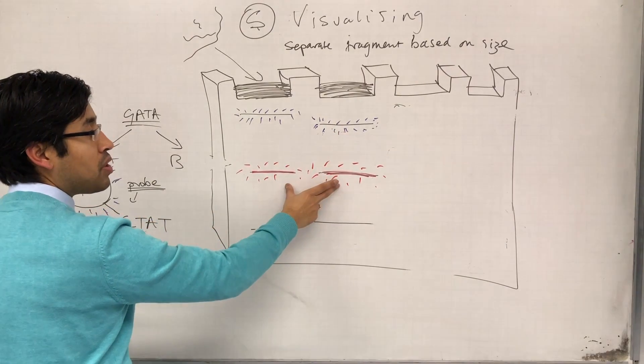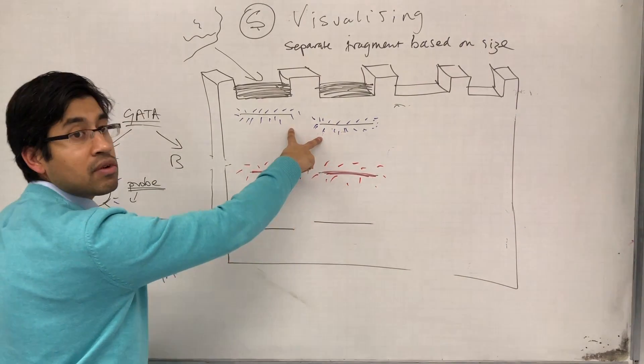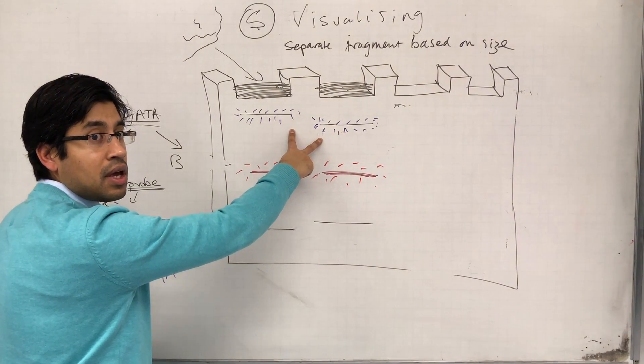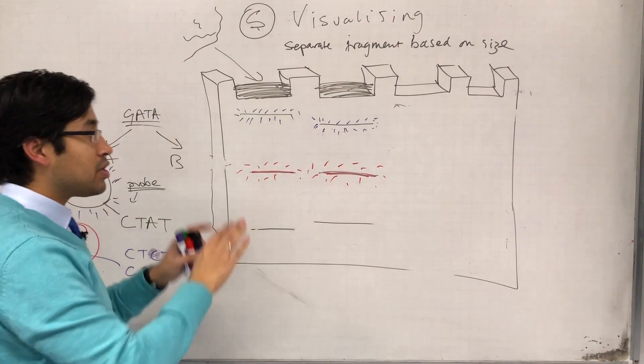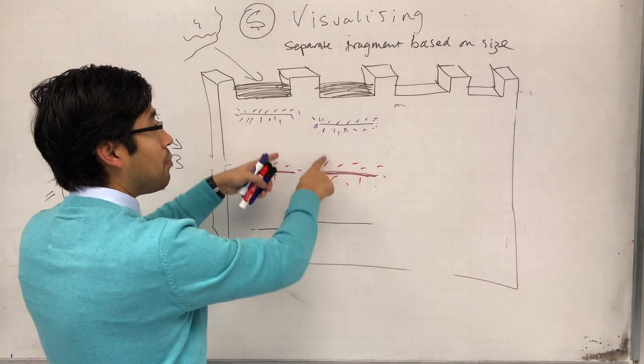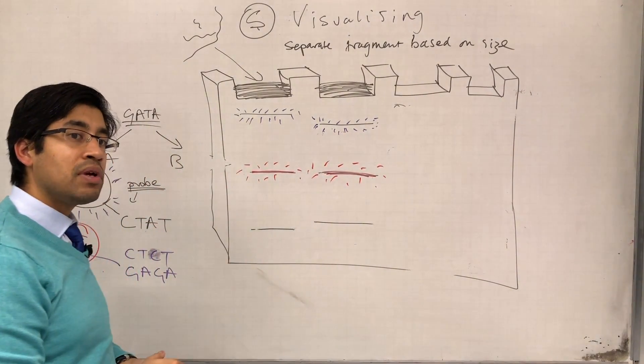But because I do CTCT and another sequence, it's telling me that actually, though they're the same for this one, they're different for this one. And so these two individuals are not the same person. But it took me to compare more than one site in order to find that information out.